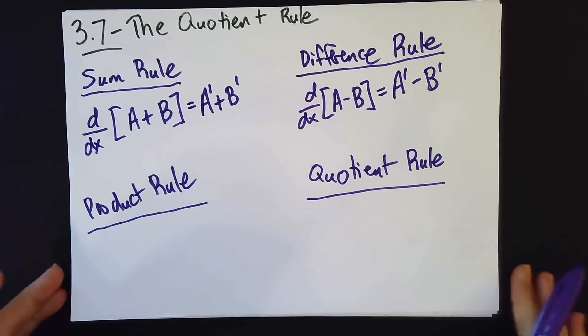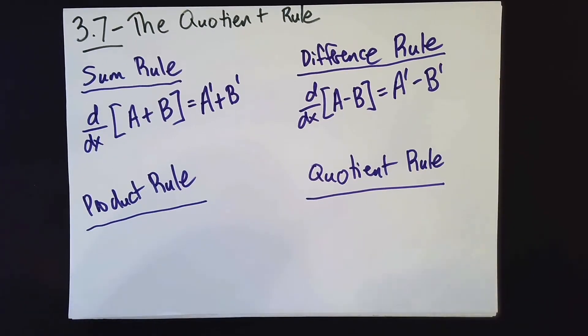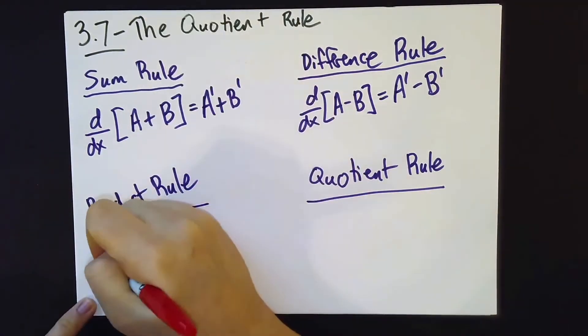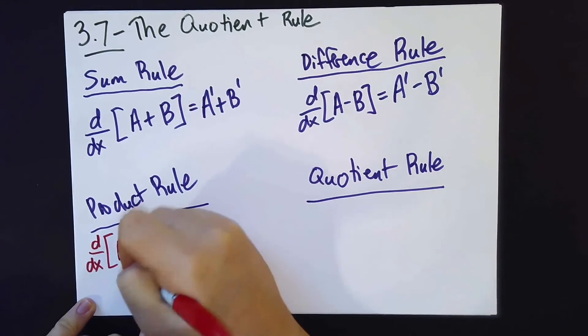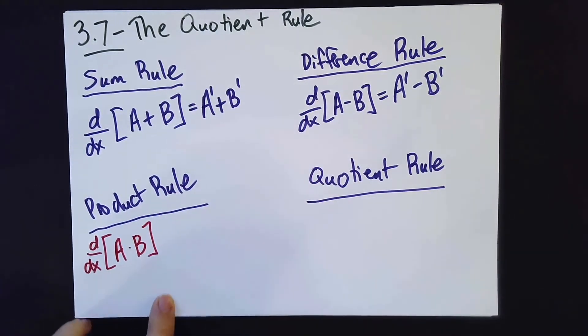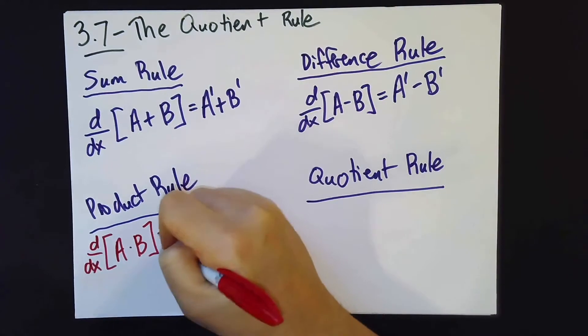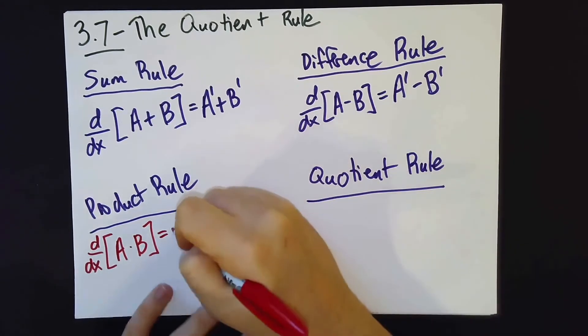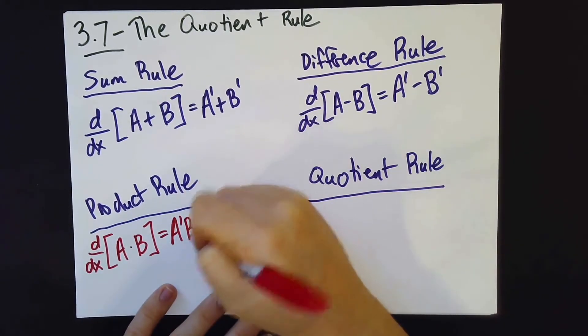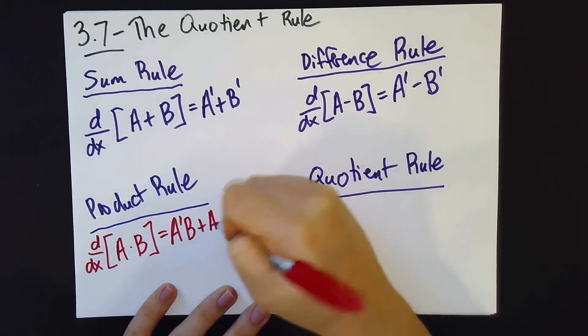Then we went on to section 3-6, where we talked about the product rule. And it turned out that if you took the derivative of thing a times thing b, then what you got wasn't the derivative of a times the derivative of b. It was this slightly more complicated derivative of a times b plus a times the derivative of b.